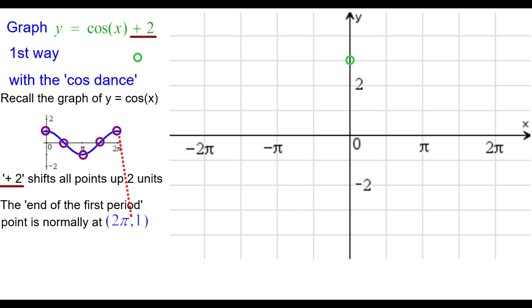I then like to look at the end of the first period, which is normally at two pi comma one. And we're going to shift those points up, all points up two units, including that one, to two pi comma three. So I'll plot that one.